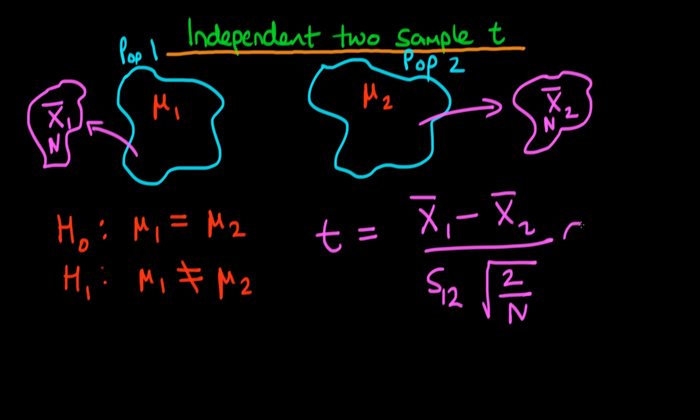So it happens to be the case that under the null hypothesis being true, this t-statistic here has a sampling distribution, which is described by a t-distribution with 2n minus 2 degrees of freedom. In order to explain the mechanism behind this particular t-test, we need to first of all explain what S1,2 is.